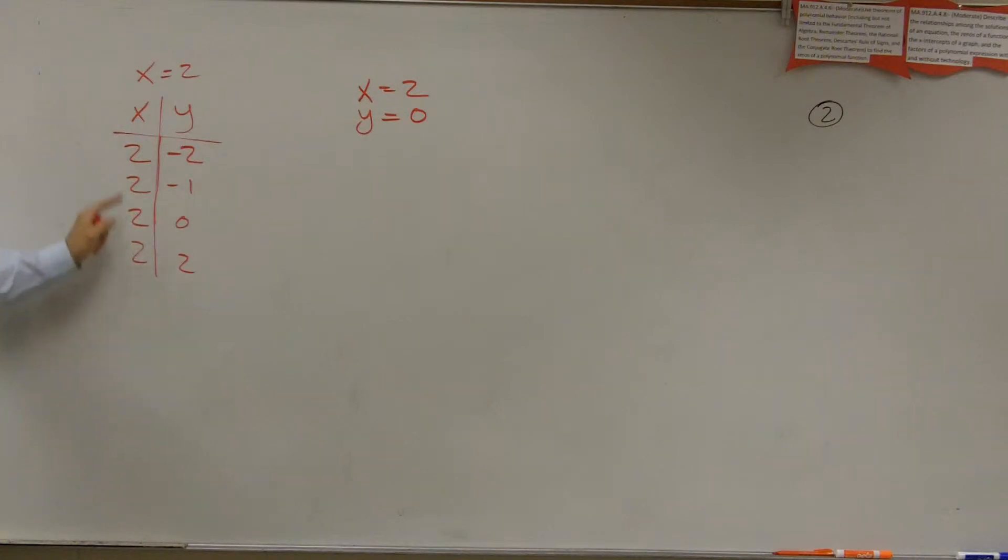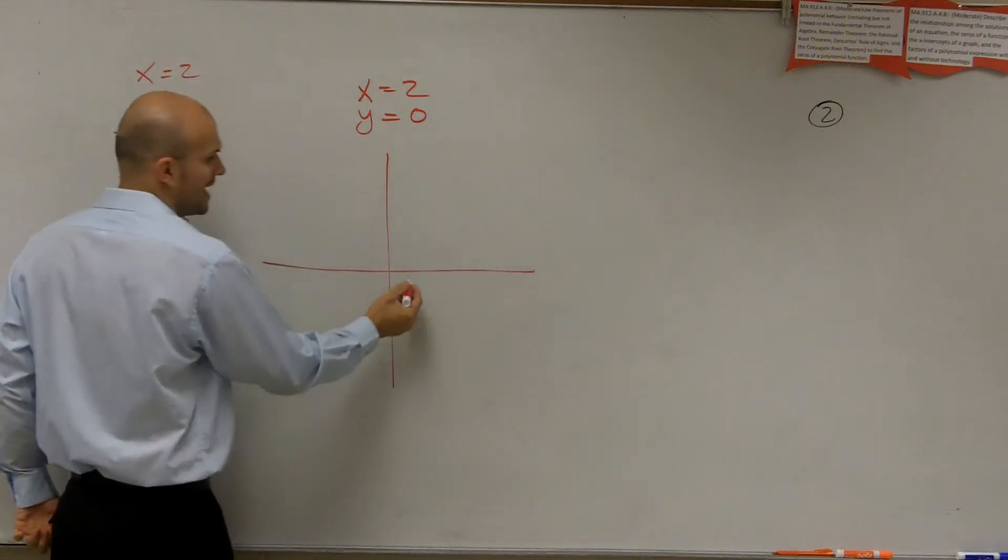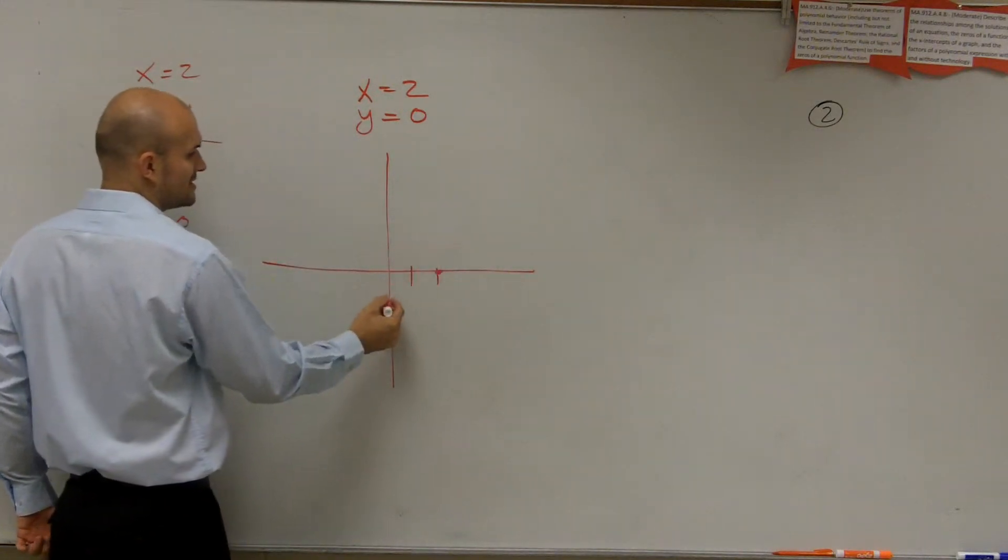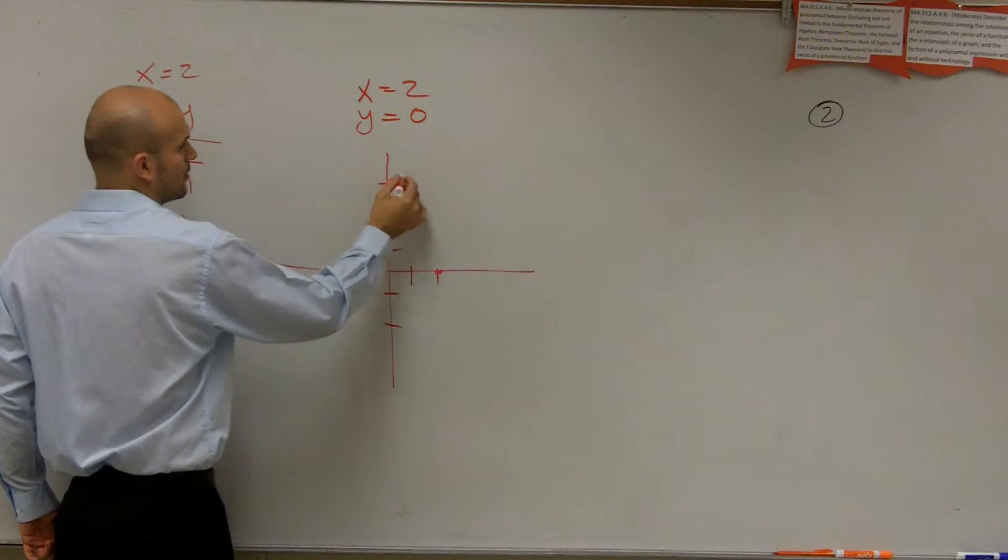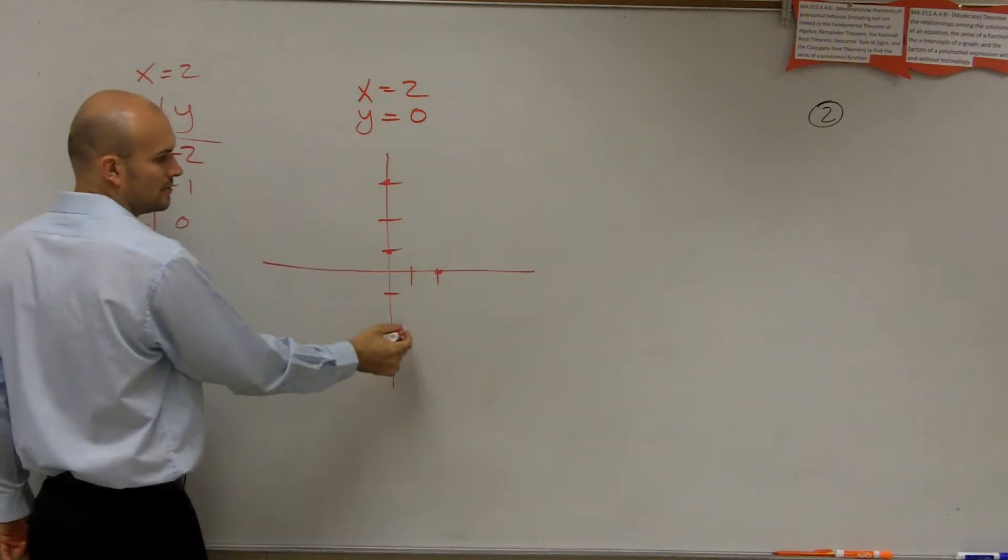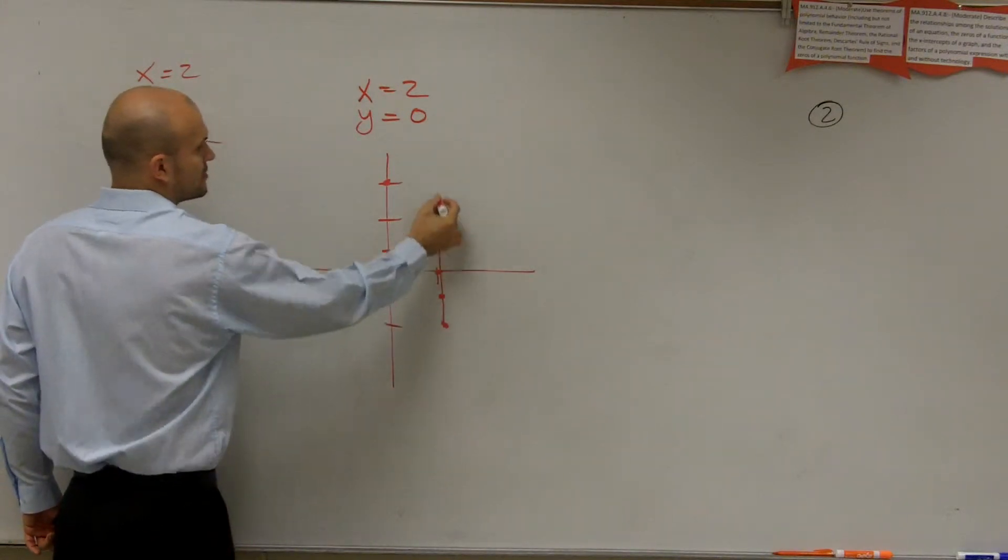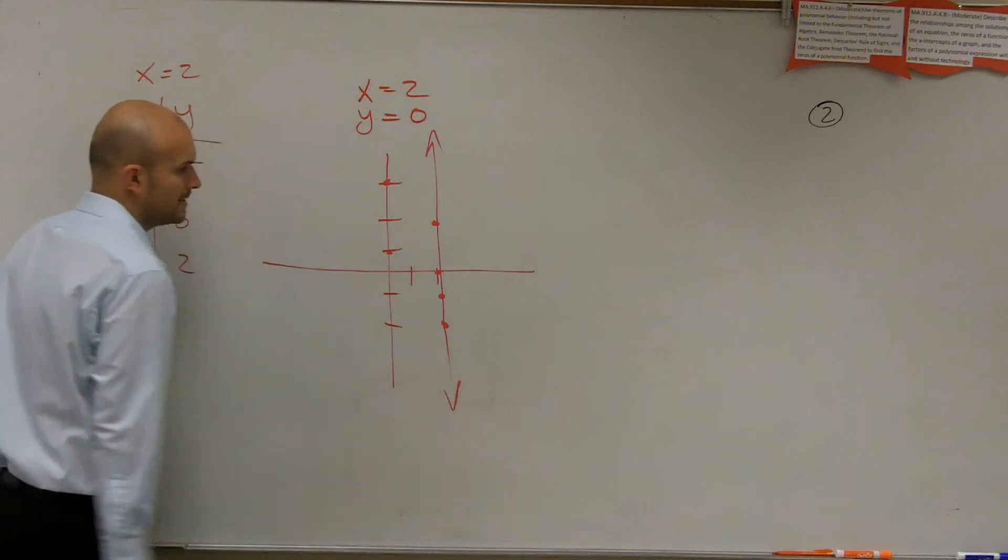Wherever y is, my x value is always 2, right? So if I was to plot that on a graph, x is 2 right here. It doesn't matter what value of y I pick. What does x always equal? 2. So it's just going to be a vertical line, all right?